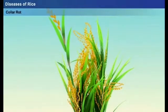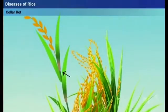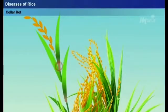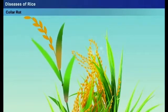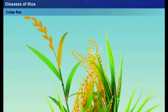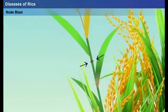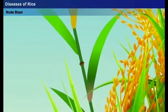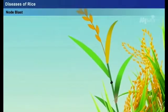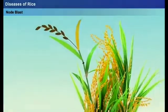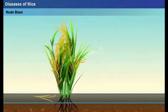Collar rot: infection at the collar occurs at the junction of the leaf blade and sheath, leading to the formation of brown lesions. In extreme cases, the entire leaf may be killed. Node blast: lesions appear on the stem nodes, changing the color of the rice tissue from brown to black. Culms and leaves at the infected node turn straw-colored and finally fall off.